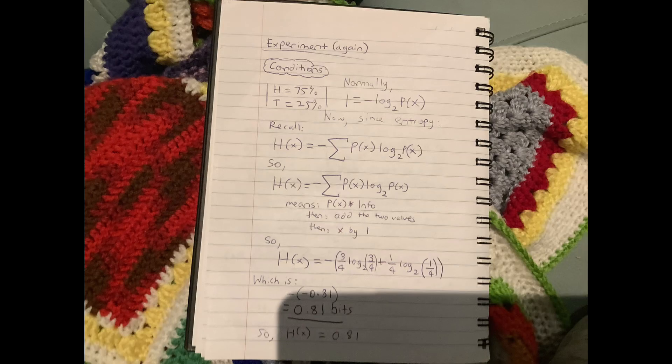So for the first one, it's heads. So it's 75%, or the same thing as 3 over 4. 3 over 4 times the binary logarithm of 3 over 4, plus 1 over 4 times the binary logarithm of 1 over 4, since we're weighting it, as you can see, with the probabilities themselves.